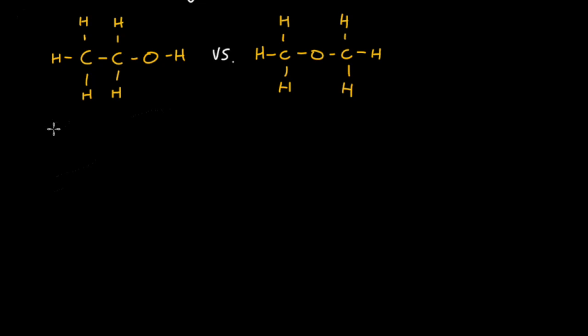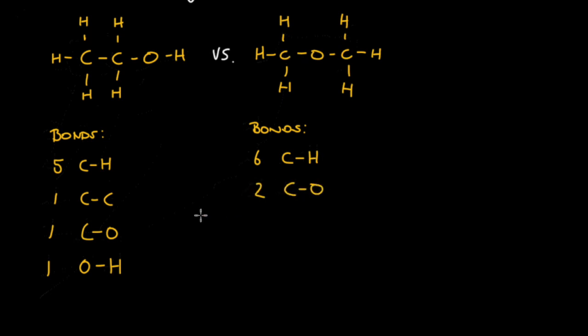Let's look a little deeper to see why they are called structural isomers. In order to do this, we will need to count the different types of bonds found in each of these two compounds. The molecule on the left has five CH bonds, one CC bond, one CO bond and one OH bond. While the molecule on the right has six CH bonds and two CO bonds. So structural isomers have a different number of specific bonds between atoms.